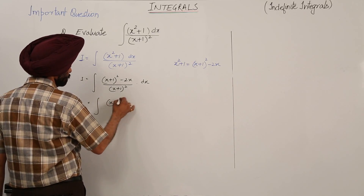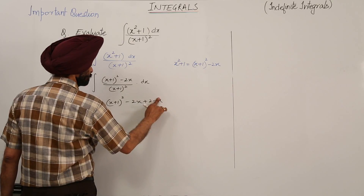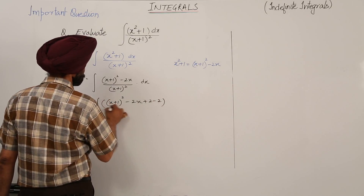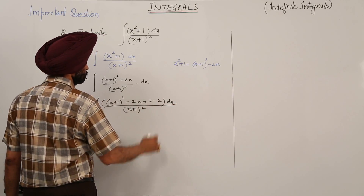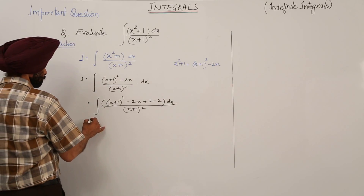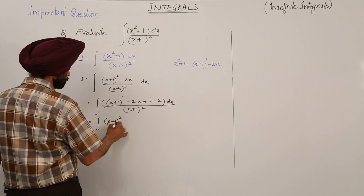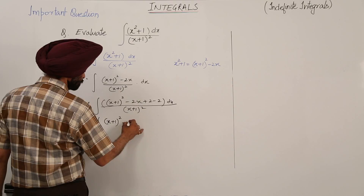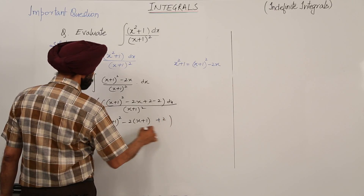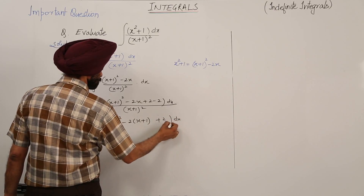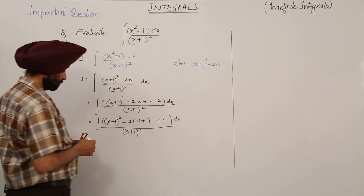Further, we rewrite the numerator as (x + 1)² minus 2x + 2 minus 2 upon (x + 1)², which can be written as (x + 1)² minus 2 times (x + 1) plus 2, all over (x + 1)². Is it clear?